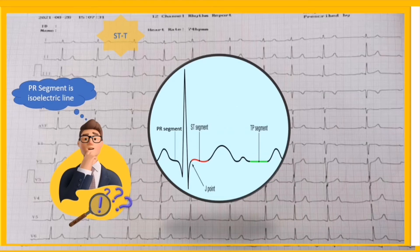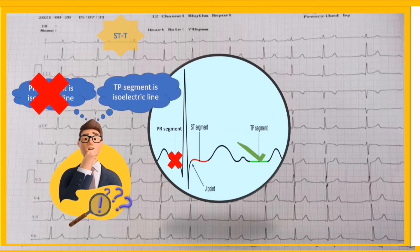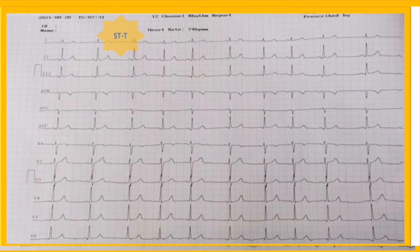There is a fundamental misunderstanding about the baseline. Some think that the PR segment is the baseline and we must compare the ST segment with it, but that's wrong. The truth is that the TP segment is the isoelectric line, and ST changes are determined using the TP segment. Here, as you see, there is no significant ST elevation or depression.